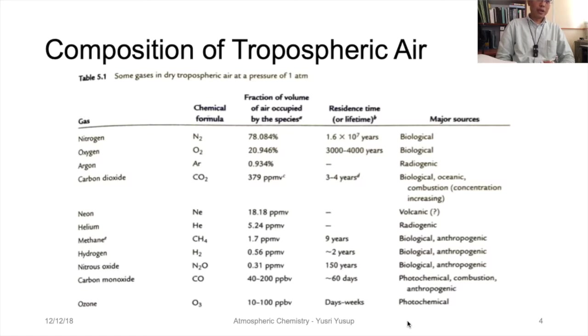Nitrogen has the biggest presence in the atmosphere. The chemical formula of nitrogen is N2. It's the most abundant gas in the atmosphere, occupying a larger fraction, a larger volume of air at 78.084 percent.